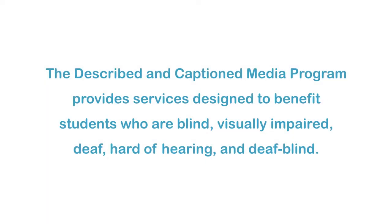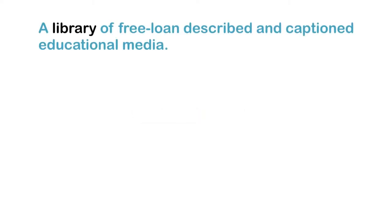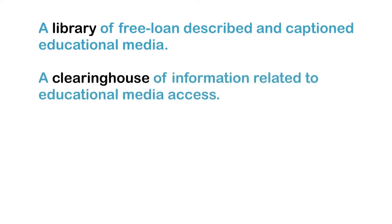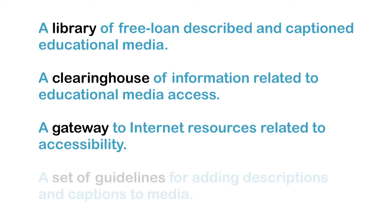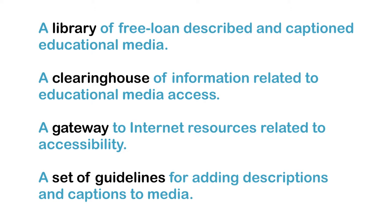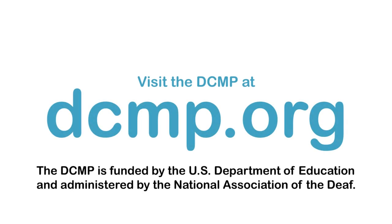The Described and Captioned Media Program provides services designed to benefit students who are blind, visually impaired, deaf, hard of hearing, and deafblind. These services include a library of free loan-described and captioned educational media, a clearinghouse of information related to educational media access, a gateway to Internet resources related to accessibility, and a set of guidelines for adding descriptions and captions to media. There are no user registration or service fees. Visit the DCMP at DCMP.org. The DCMP is funded by the U.S. Department of Education and administered by the National Association of the Deaf.